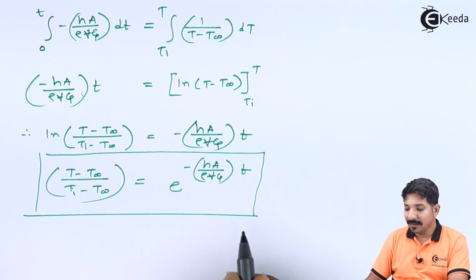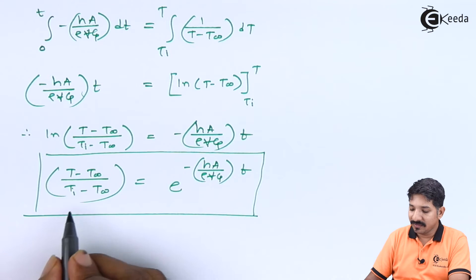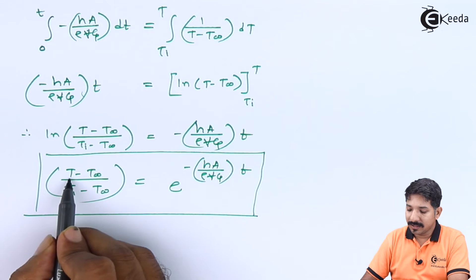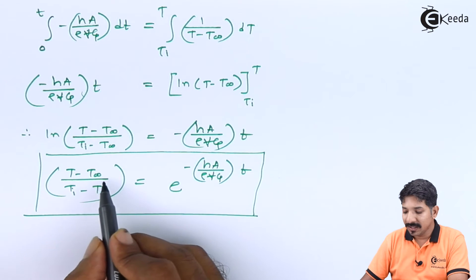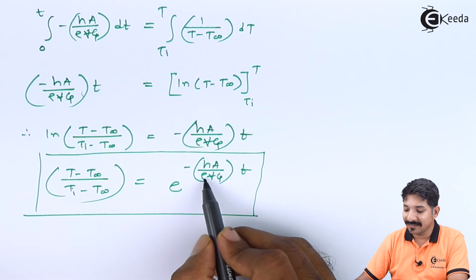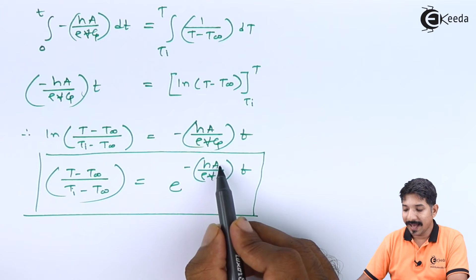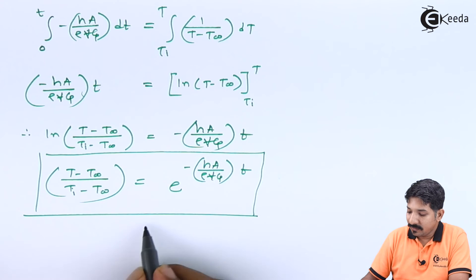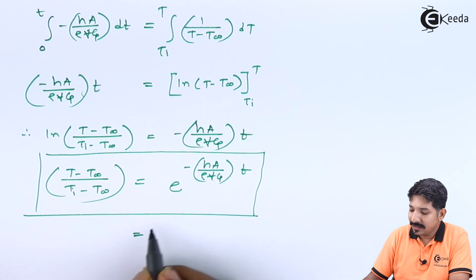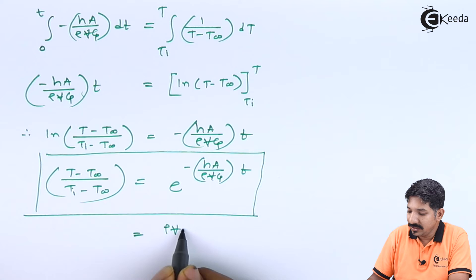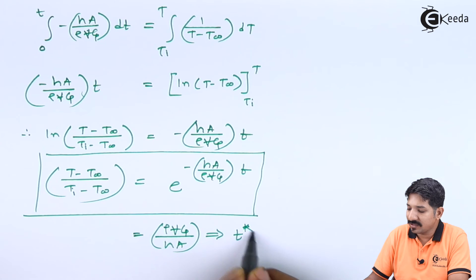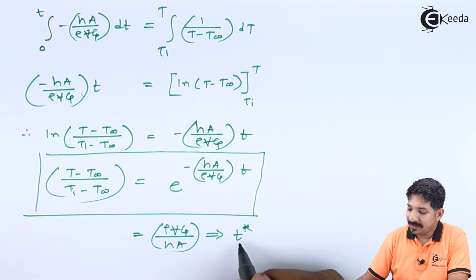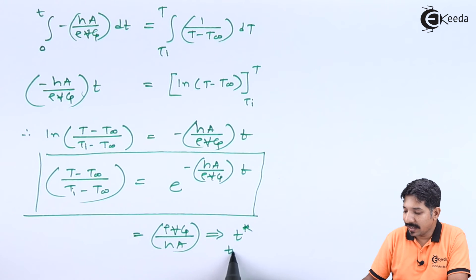Now this can be said as the final expression. Here we can find the temperature of a body at any given time t, if I know all the other parameters such as the initial temperature of a body, the surrounding temperature, the heat transfer coefficient, density, volume, specific heat and the area. Now further if you want to express, then I can say that this rho V CP upon HA, this itself is given as some time constant T star, so this T star is nothing but time constant.